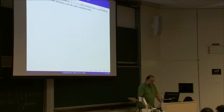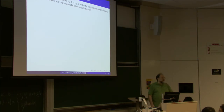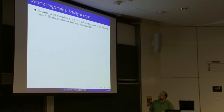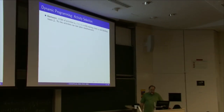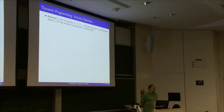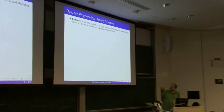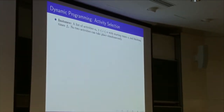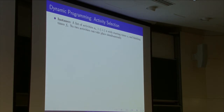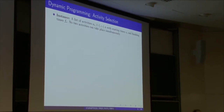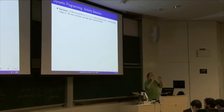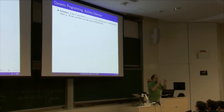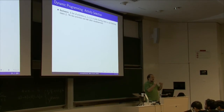Let us see a typical example where greedy fails but dynamic programming works beautifully. This is exactly the same setup as the scheduling problem — we had a timeline with a bunch of activities with starting and finishing times, and we wanted to pick a subset of non-conflicting, non-overlapping activities that is largest in number.